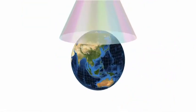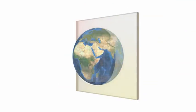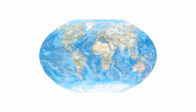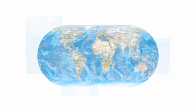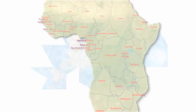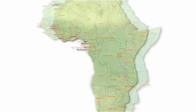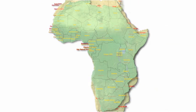Map projections can come in all sorts of shapes and sizes. These shapes are flattened into a two-dimensional paper map or digital data set used in geographic information systems or GIS. But no matter what shape is used, the resulting flat surface is distorted.